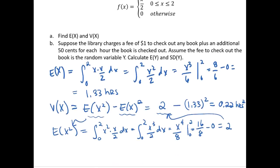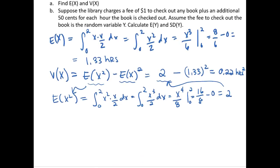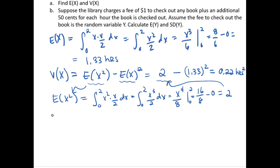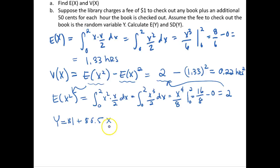Now for the second part of this example. The library charges a one-dollar fee to check out any book, plus an additional 50 cents for each hour the book is checked out. This means we have a new random variable y, equal to one dollar plus 0.50 times x. We now have a new random variable expressed as a linear combination of another random variable.